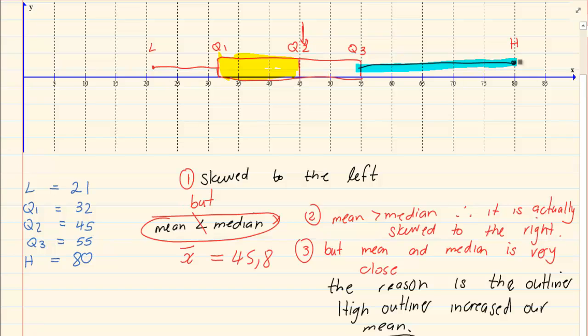Because the outliner actually brought up my mean. I still believe that the data is negatively skewed.